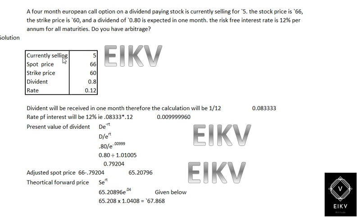Going ahead with the solution, we have the spot price as 5, the forward price would be 66, and the strike price is 60. The dividend is 0.08 and the rate of interest would be 12%.